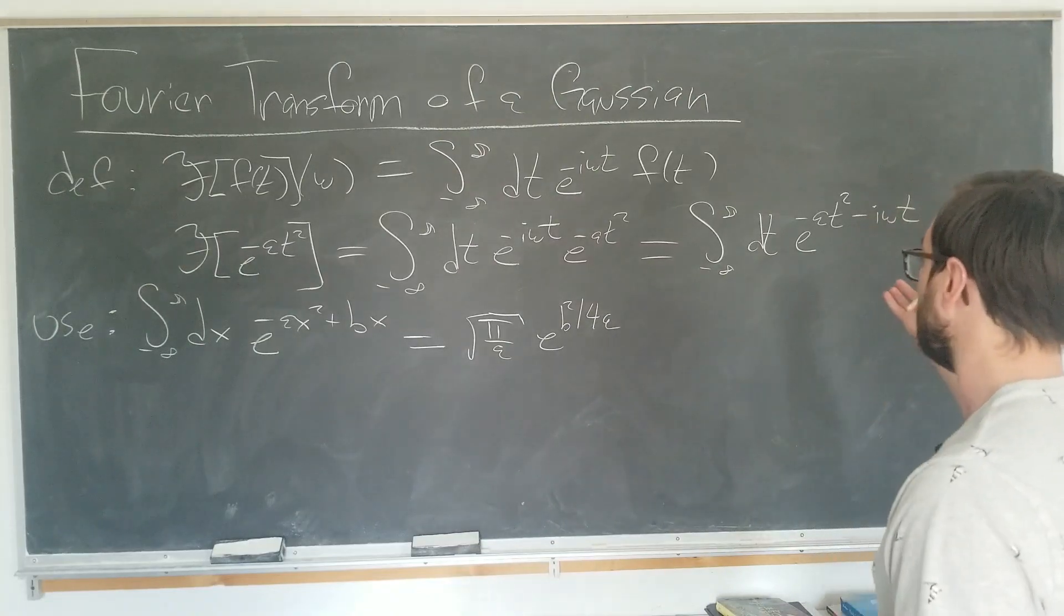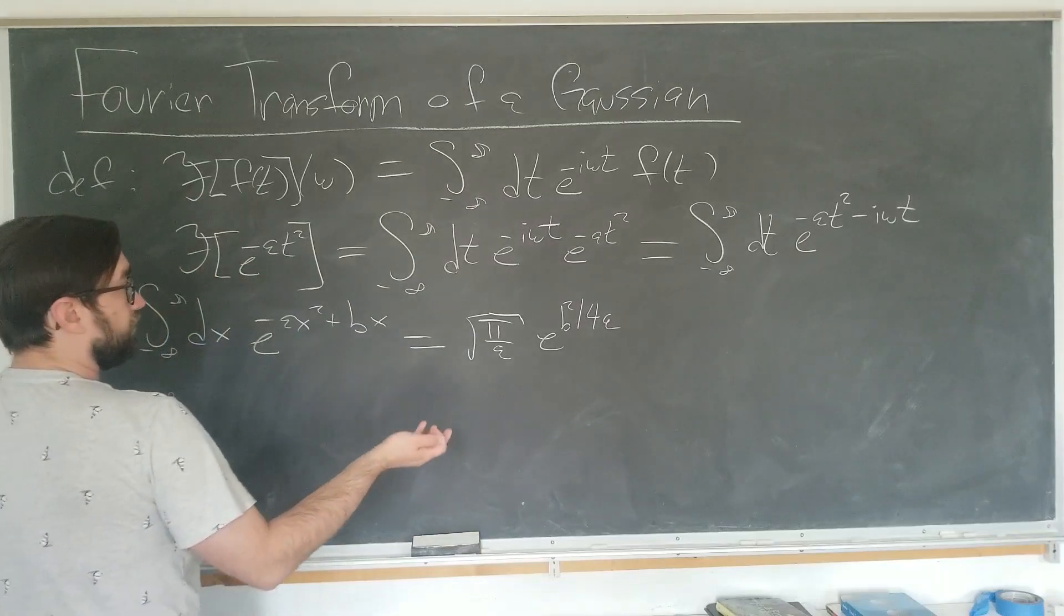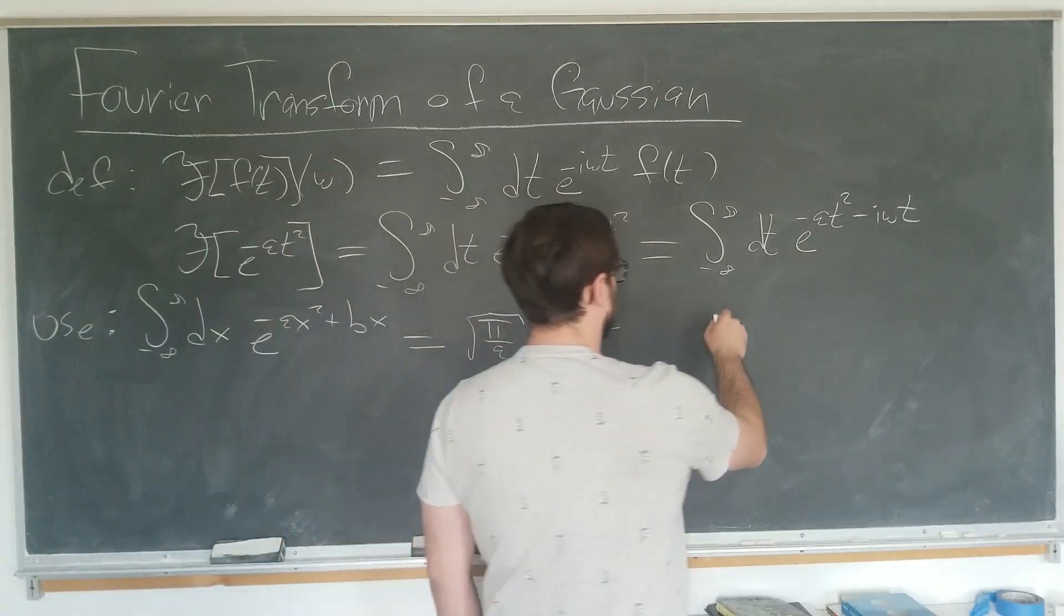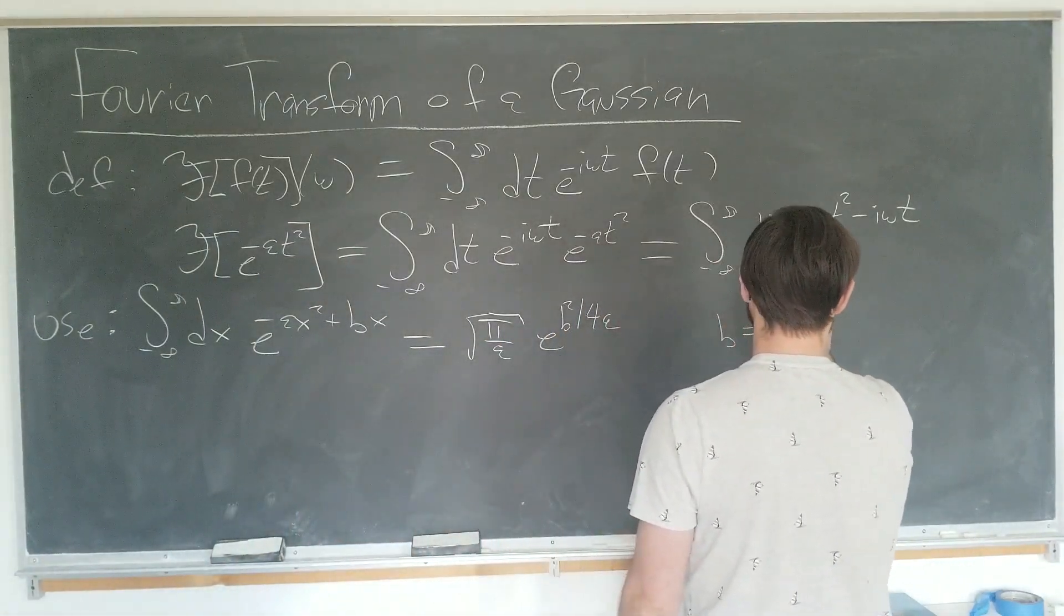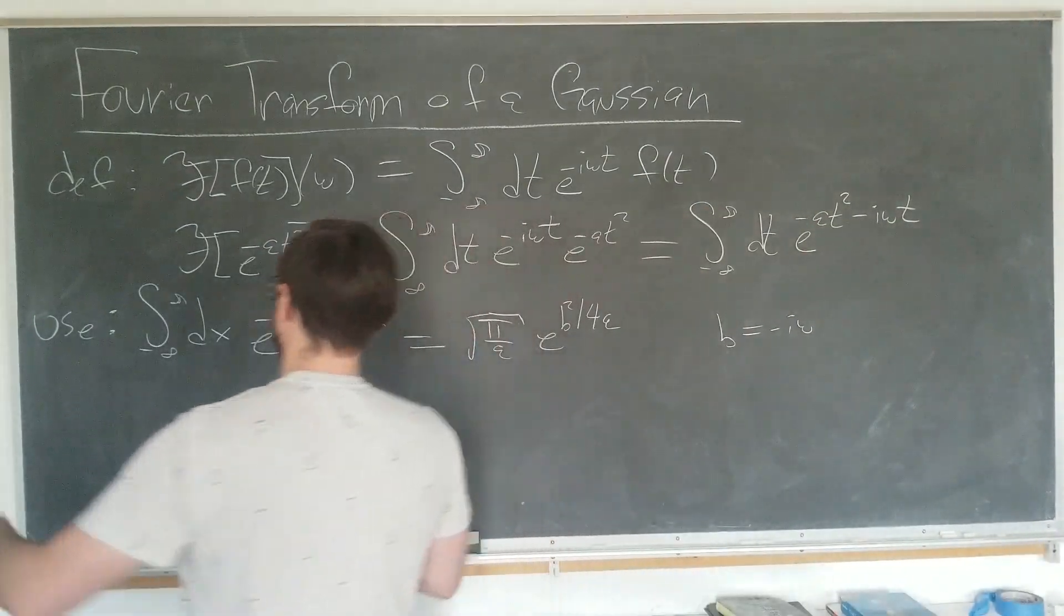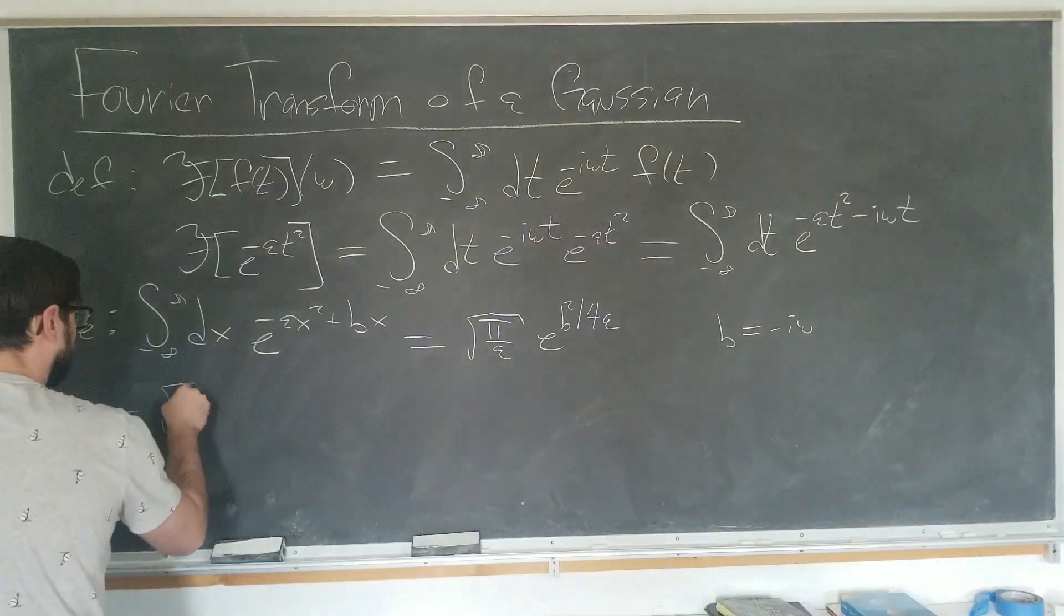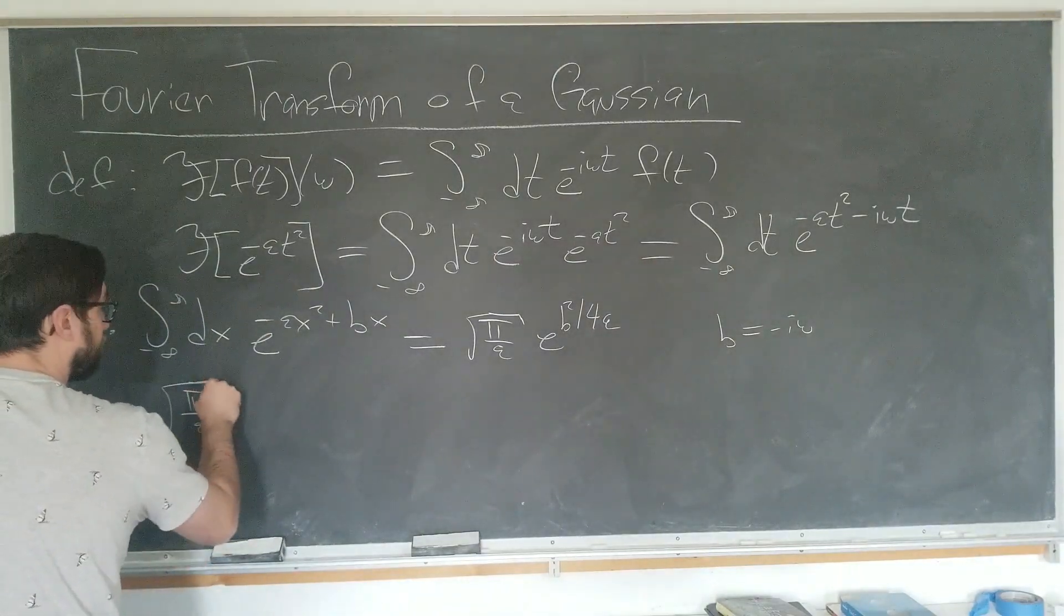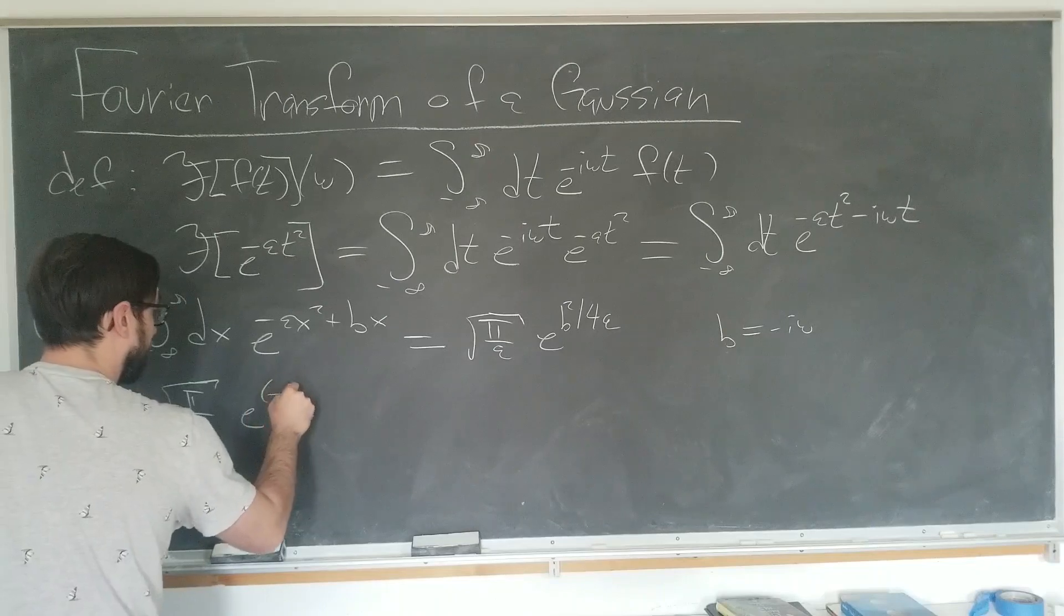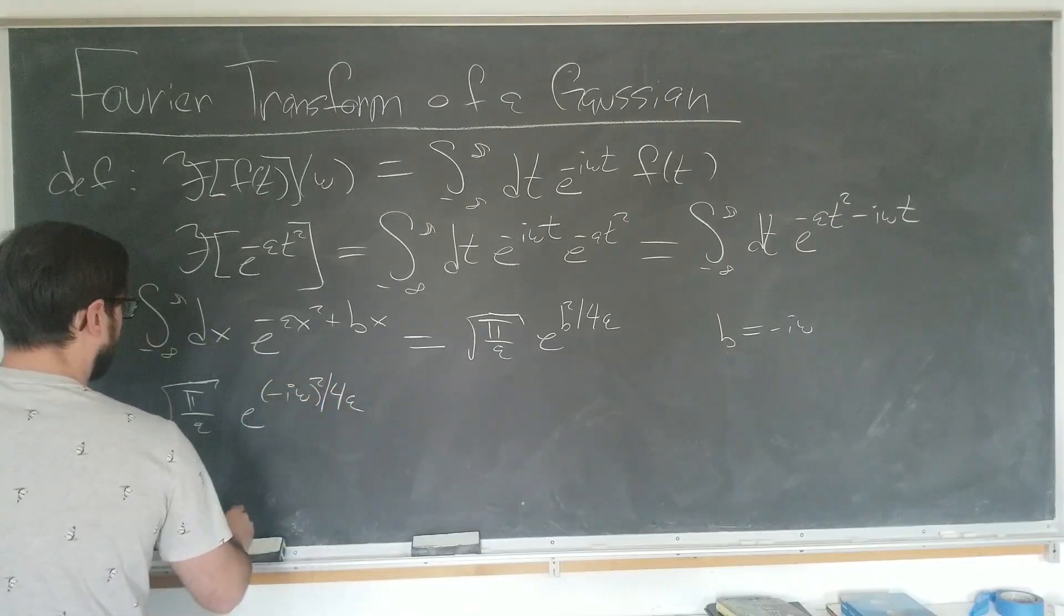I'm just going to use this and make our derivation shorter. Basically, all we have to do is plug in b equals minus i omega into this and our proof is complete. This now evaluates to square root of pi over a e to the minus i omega squared over 4a. And of course,